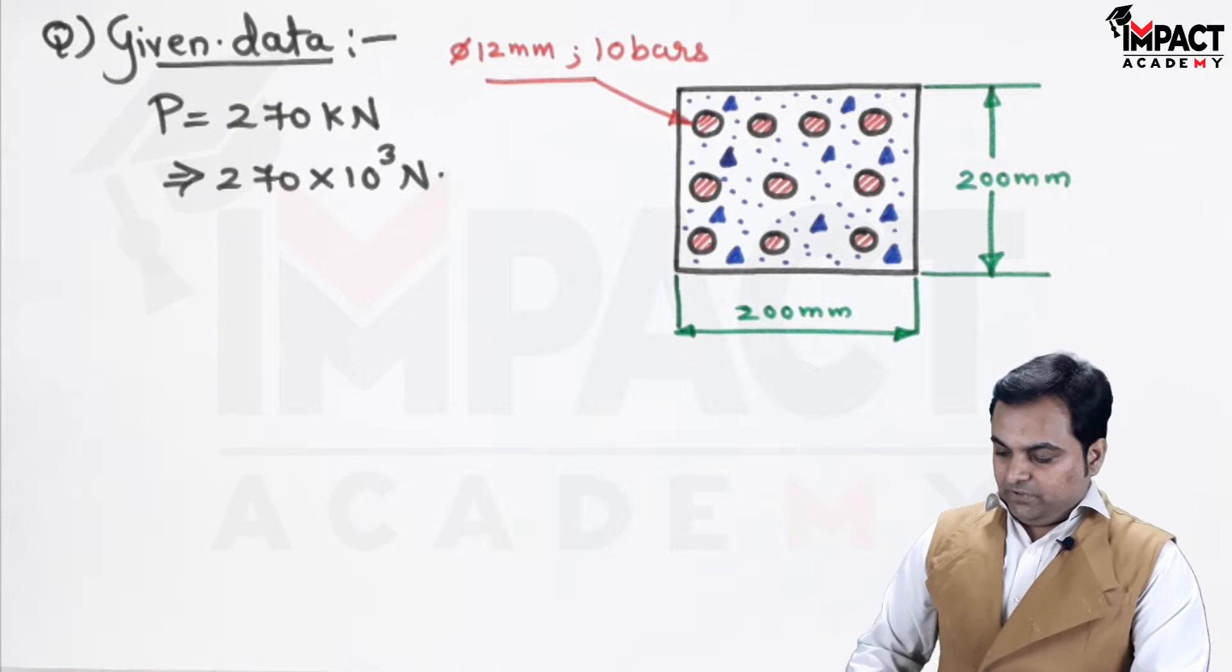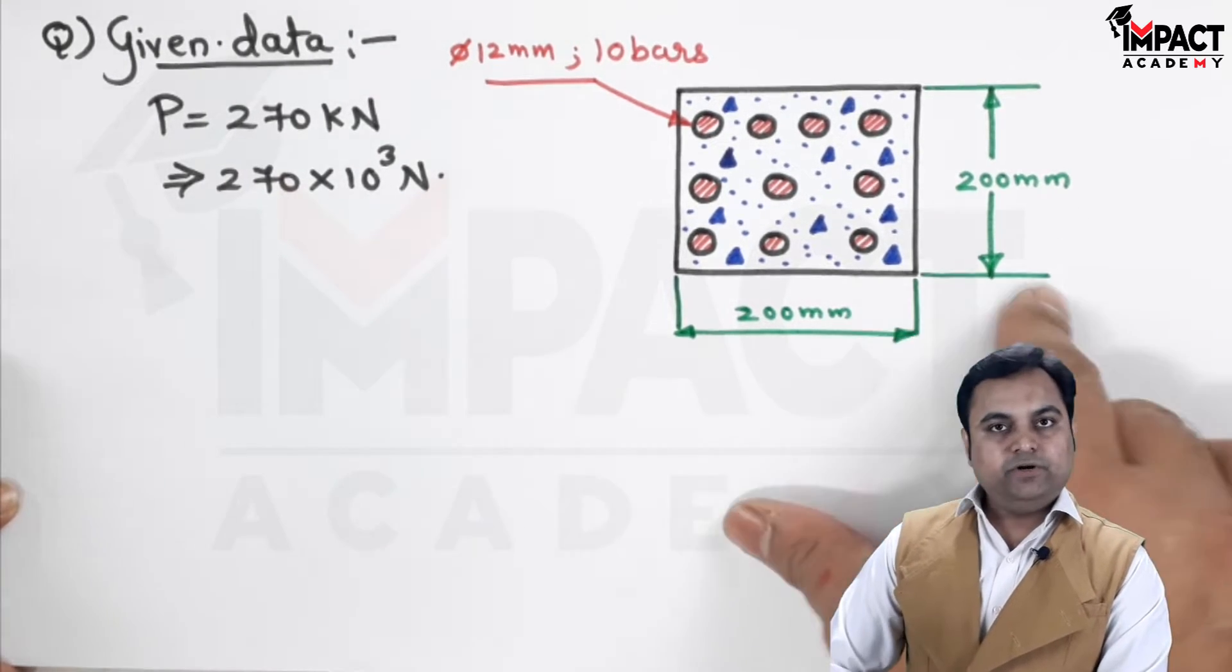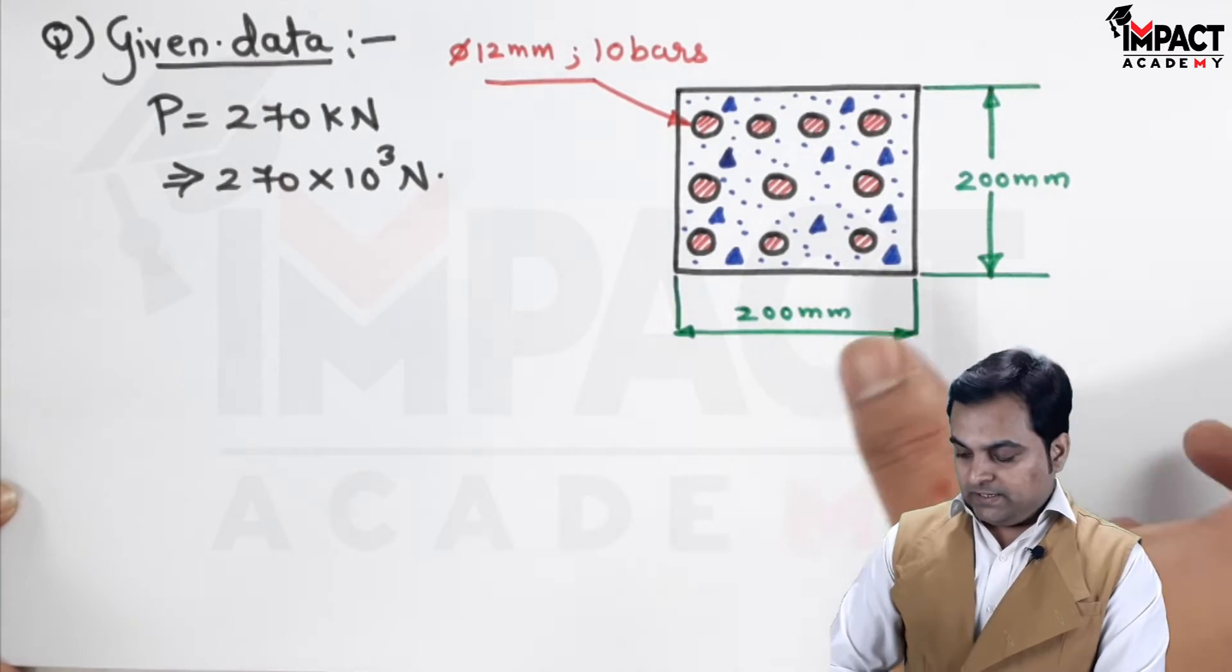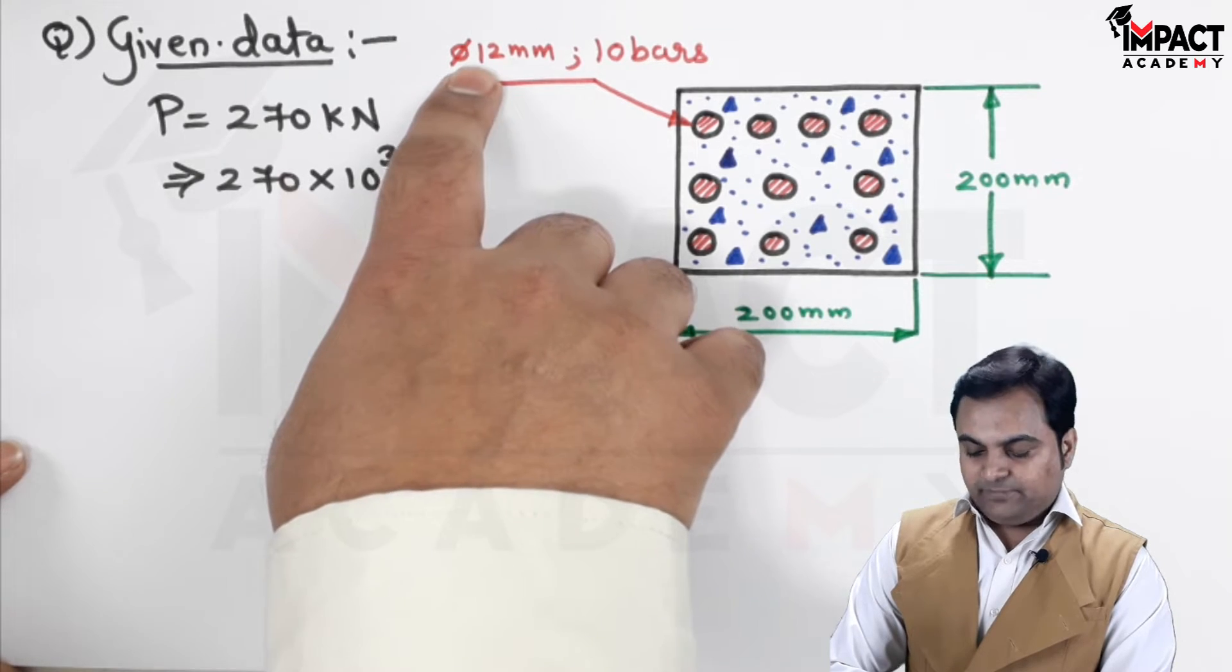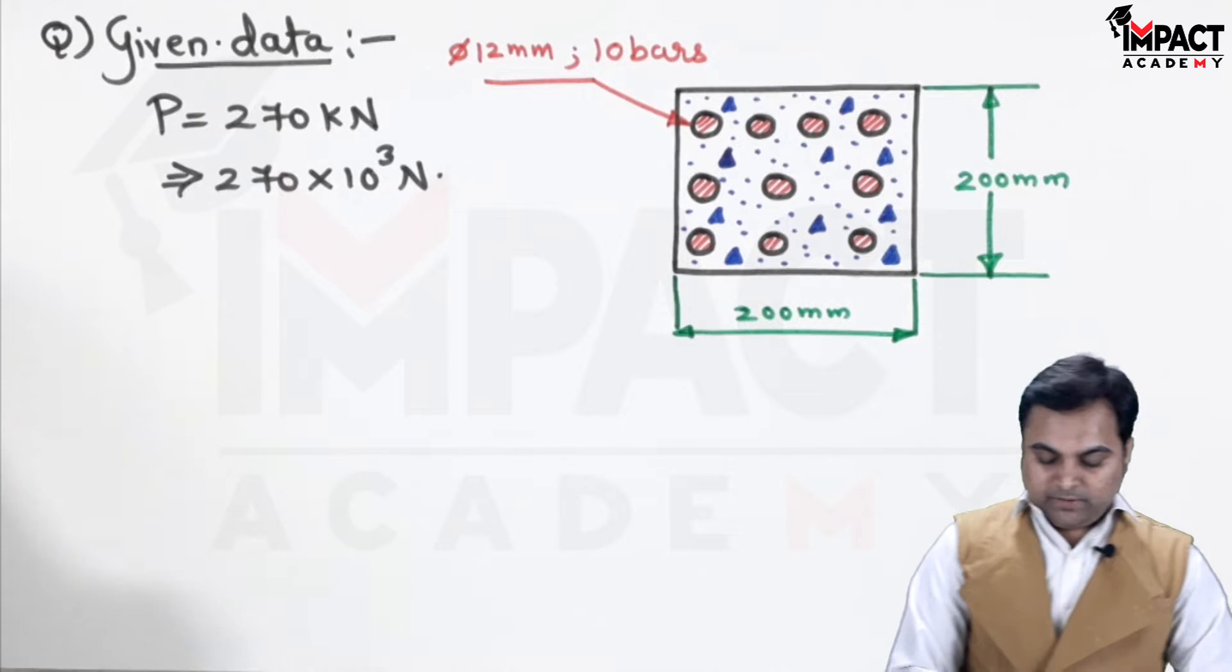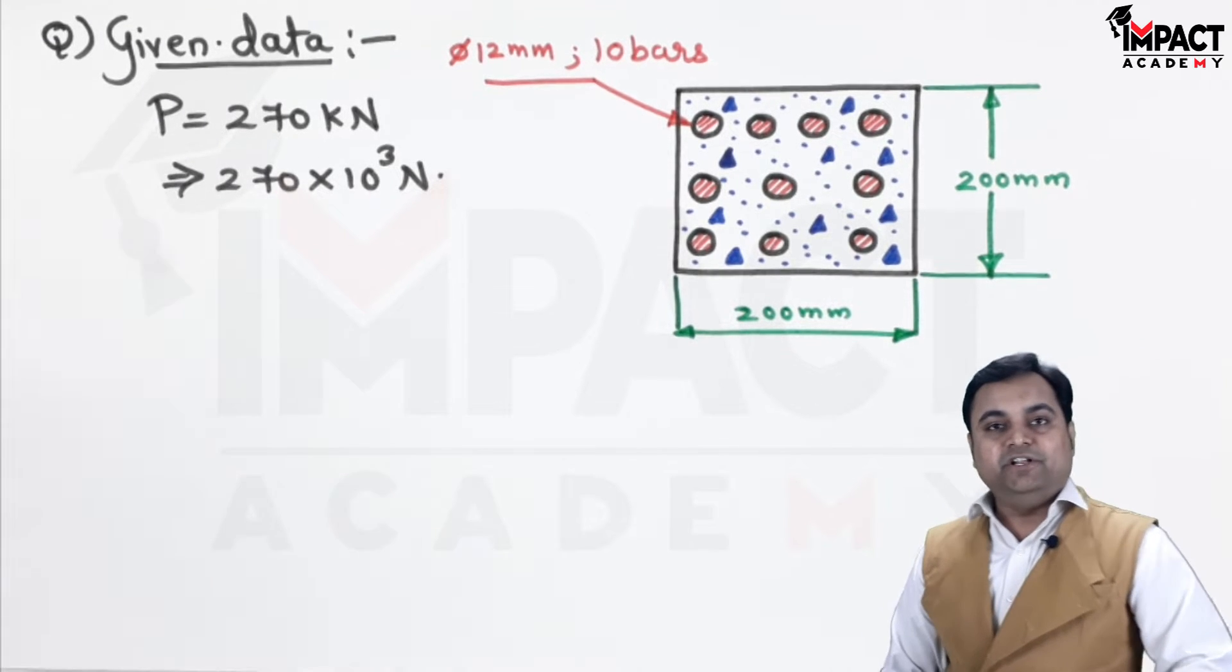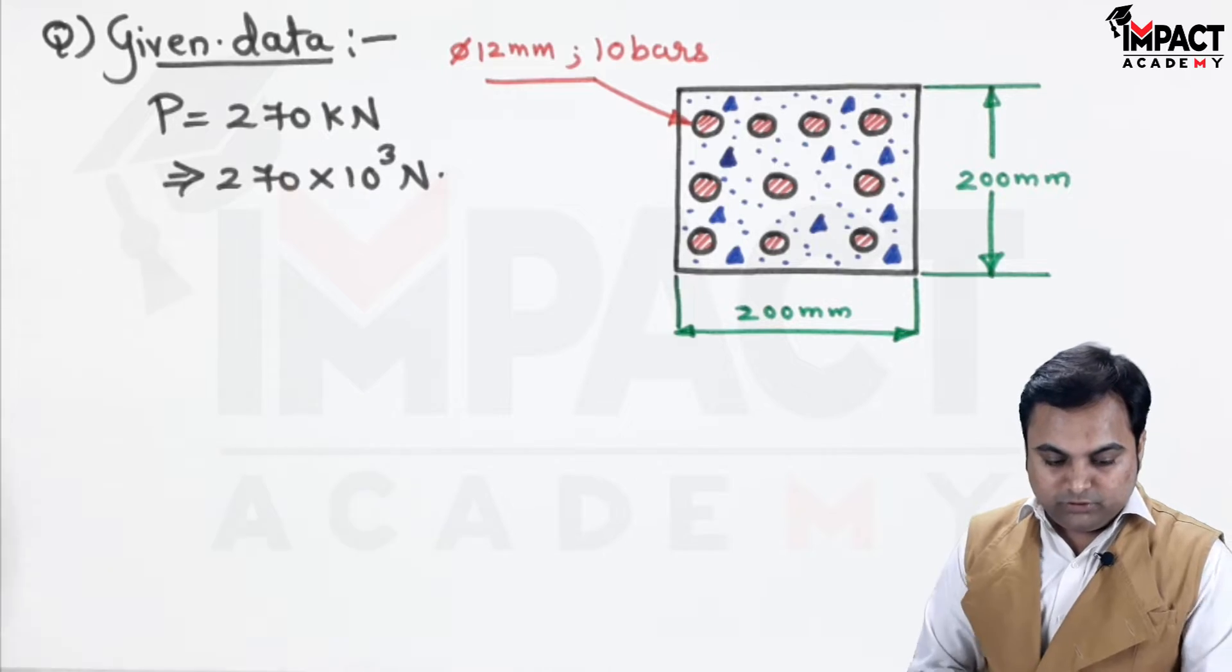So, here is the diagram in which we have a concrete block. It is 200 by 200 and RCC column inside which there are 10 bars of steel having diameter 12 mm each. So, here there are 10 bars. So, it is we can say made up of composite material, two different materials.